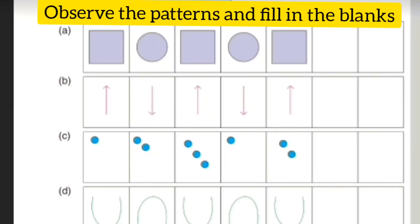We will solve the sums based on these patterns. Sum A. The first box is square, circle, square, circle, square. What will become? Circle. In the next box, square.